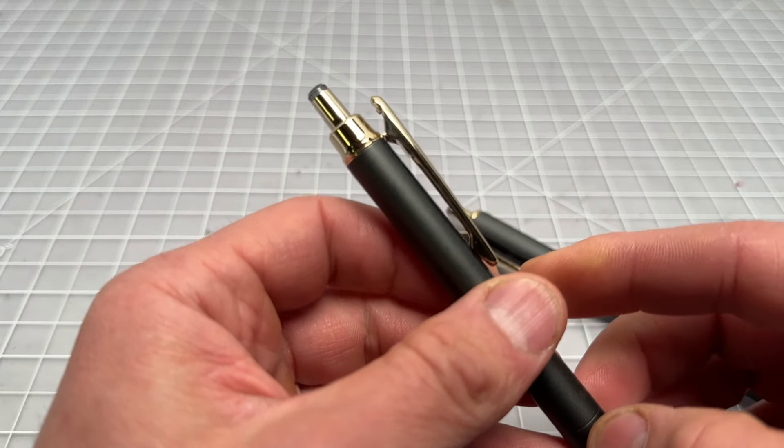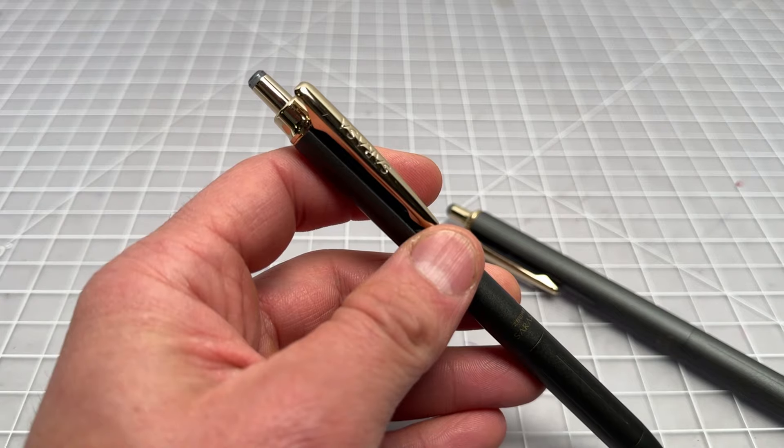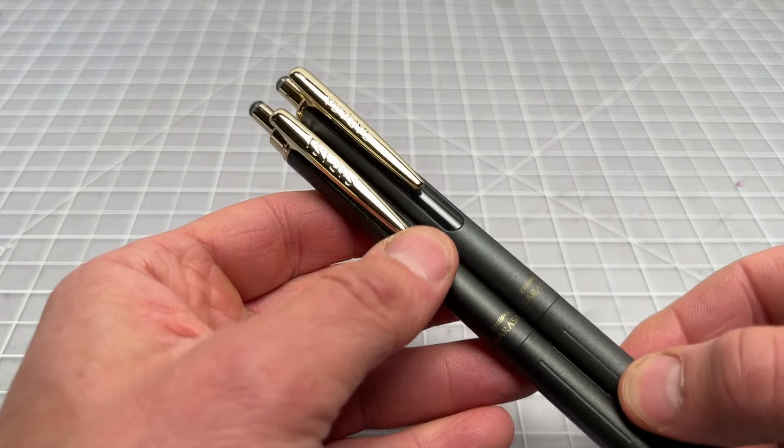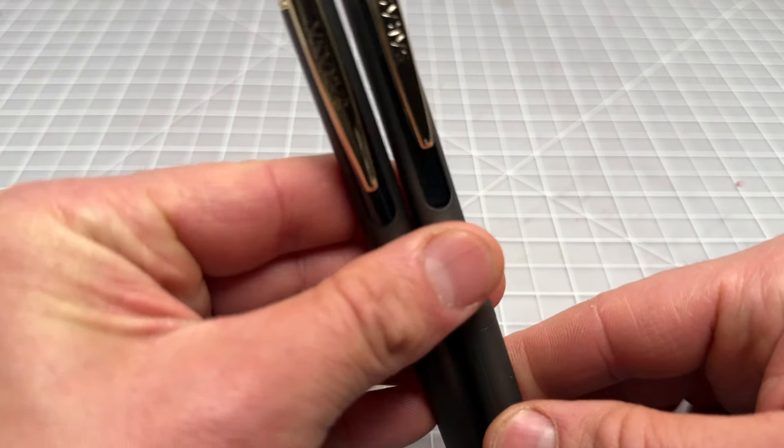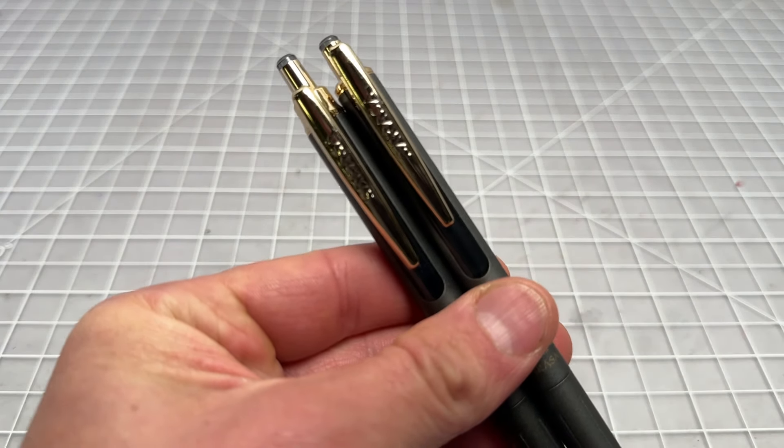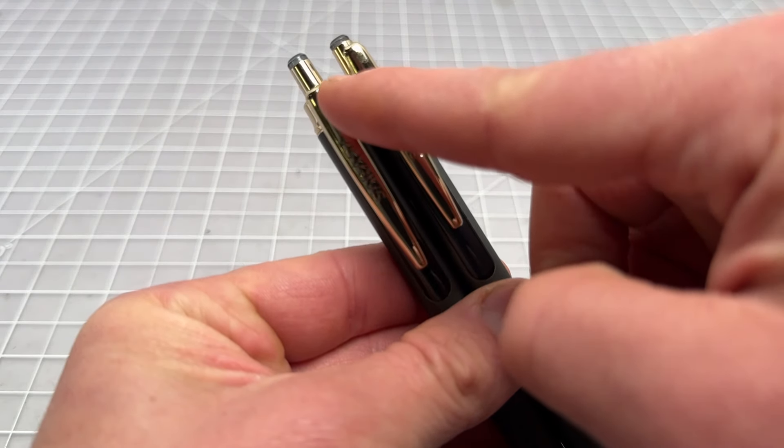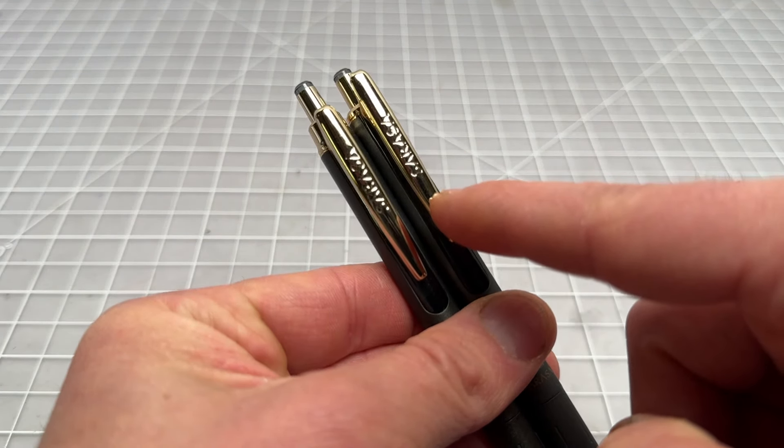So the number one change is with this pen they lowered the placement of the clip and you can see that if you go ahead and flatten out the bottom of the pens and have the two level next to each other. You can see the Vintage Renewal has the clip maybe a quarter inch below the clip placement of the original Sarasa Grand.